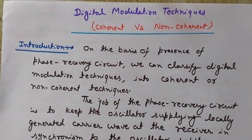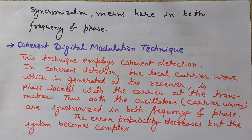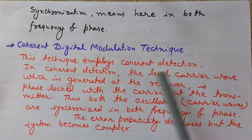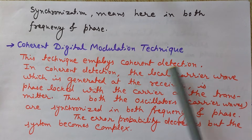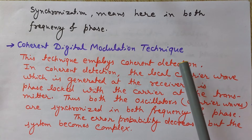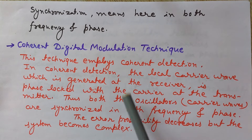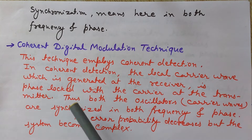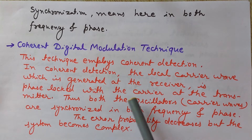Now let's see what coherent digital modulation techniques are. This technique employs coherent detection. In coherent detection, the local carrier wave generated at the receiver is phase-locked with the carrier at the transmitter.